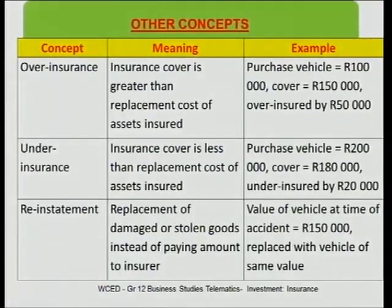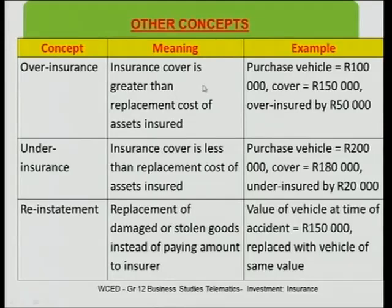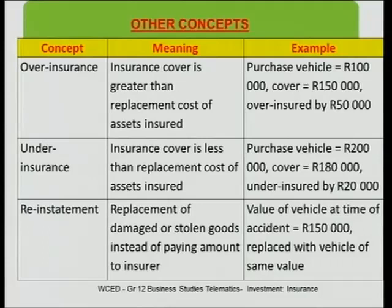Some other concepts with regard to insurance. The term over-insurance — what does that mean? So you get over-insurance and you get under-insurance. When you are insuring anything, whether it is a home, a building, a vehicle, you can possibly insure it for more than what it will actually cost. So if you bought a vehicle for 500,000 Rand, if you decide to insure it for a little bit more, when you have to replace it, it will become a bit costly.